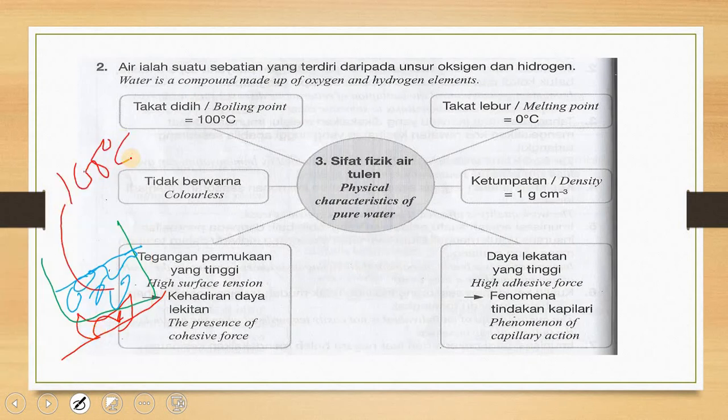The boiling point of pure water is 100 degrees Celsius. What is meant by pure water is that it does not have any additions — no salt added, no sugar or anything else. It does not have any addition of other substances, so it is pure. This pure water will boil at 100 degrees Celsius.